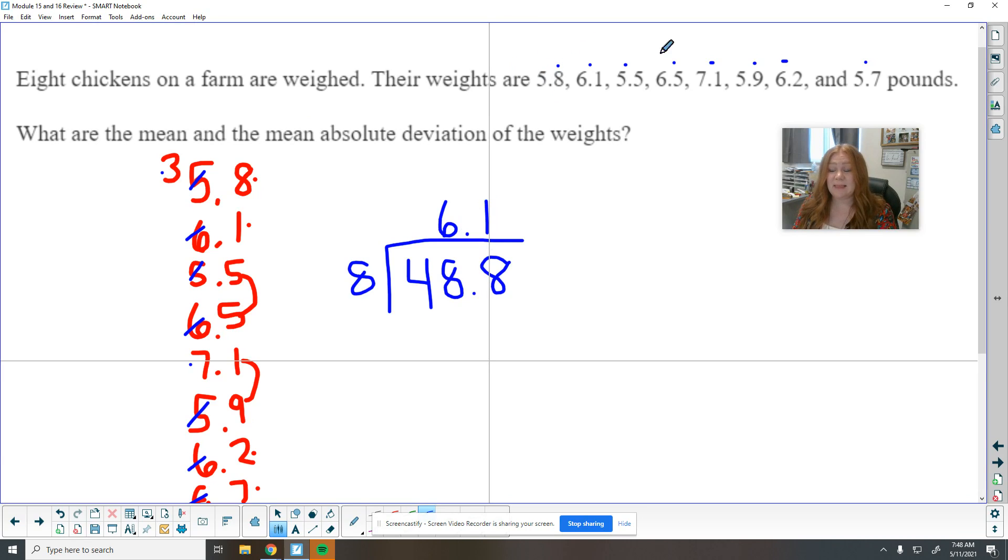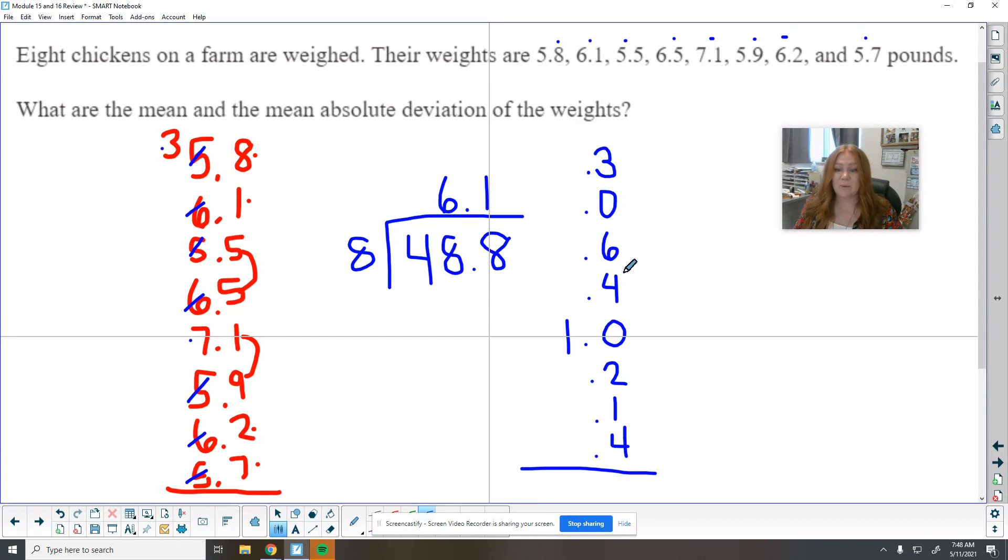So now I'm going to make a list of how far away these are. So to get from 5.8 to 6.1 is 0.3. So I'm just going to list them out so I can add them up. This is zero. 5.5 to 6.1 is 0.6. 6.5 to 6.1 is 0.4. 7.1 to 6 is a whole pound different. 5.9 to 6.1 is 2 tenths. 6.2 to 0.1 is one tenth different. And 5.7 up to 6.1 is 0.4. So now we are finding the average of these distances. So you really want to make that list because you've got to keep track of them.